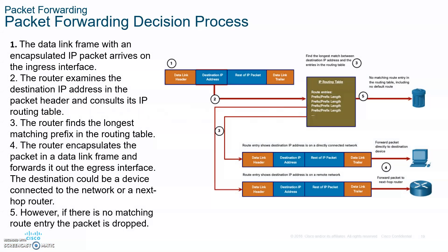There are three types of packet forwarding mechanisms. Packet switching (process switching) is when the CPU goes through every entry in the routing table to find a match and sends it to the exit interface. Fast switching is the same process but uses a fast-switching cache — it checks cache memory first, which makes it quicker.